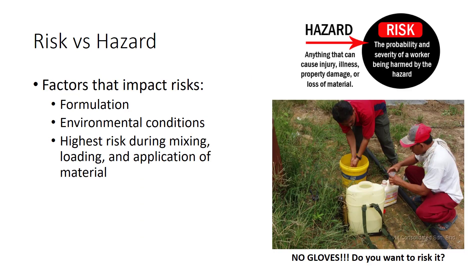Hazard — the inherent ability of a pesticide to produce an adverse effect — is a constant for a particular pesticide product. Risk in toxicology is the probability that a chemical will cause harm. In the case of pesticides, risk is a function of hazard and dose. The degree of risk can depend on the concentration of the pesticide, the way it is handled, and the duration of exposure.